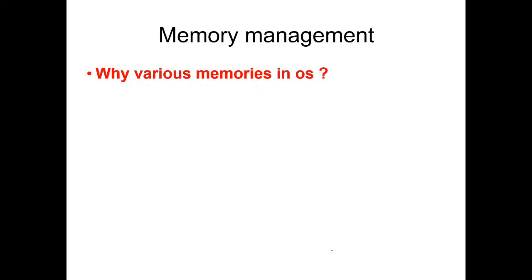A user needs large memory to store data — the more memory there is, the more data can be stored. So the user always needs large memory to store a large number of data. The user also expects fast response from the system, meaning the access time must be fast. Another user expectation is that the per-unit cost of memory must be less, so that more memory can be had at less cost, and the response from the system must also be fast.